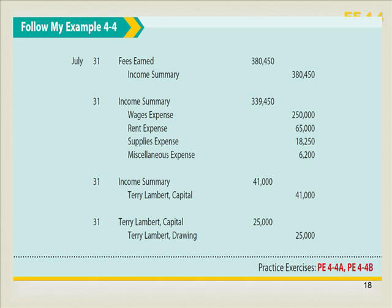The first closing entry: debit fees earned for the total amount, credit income summary for the amount — this brings revenues to a close. The second entry: close expense accounts by debiting income summary and crediting each expense account — this brings expense accounts to a close. The third entry: close income summary with $41,000 net income — debit income summary, credit capital to increase capital. The fourth closing entry: close drawing by debiting capital and crediting the drawing account. For additional practice, try exercises 4-4A and 4-4B.